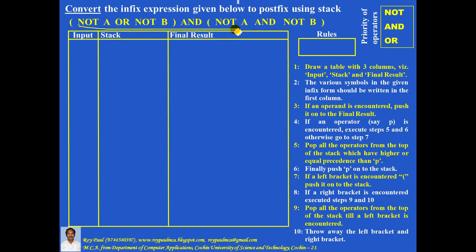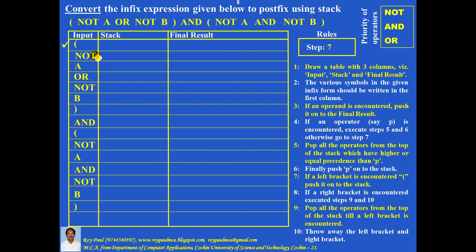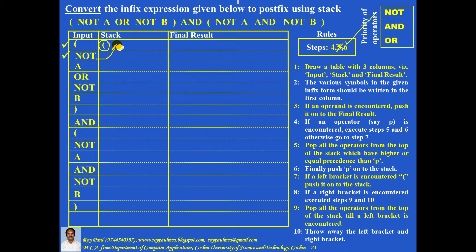Step 2: these symbols should be written in the first column, one below the other. If a left bracket is encountered, the rule is push it onto the stack. If an operator is encountered, two things are to be done. Step 5: remove all operators from the top of the stack which have equal or higher precedence than this one. The top of the stack contains the left bracket — it is not an operator — so step 5 is not needed. Step 6: push this operator onto the stack. The stack now contains the left bracket and NOT.